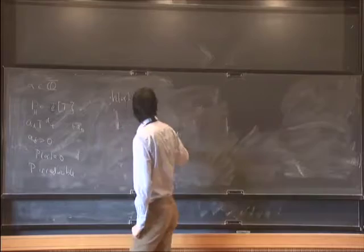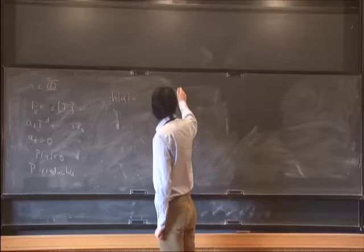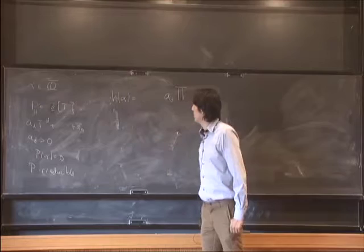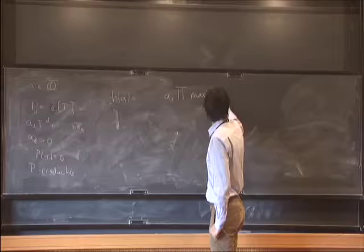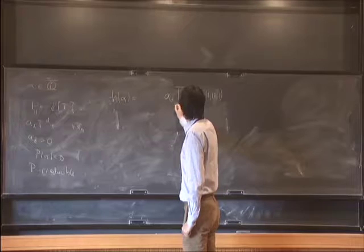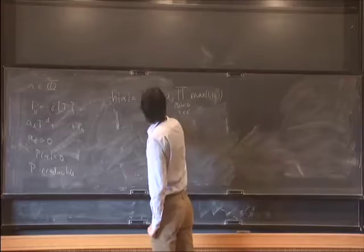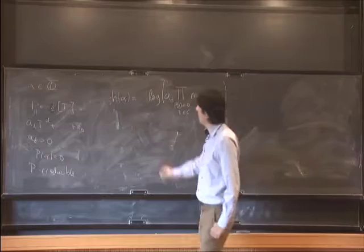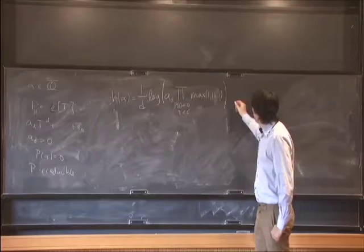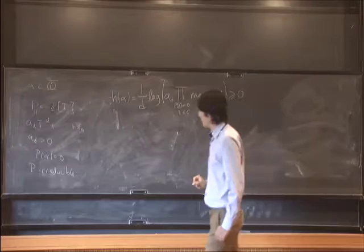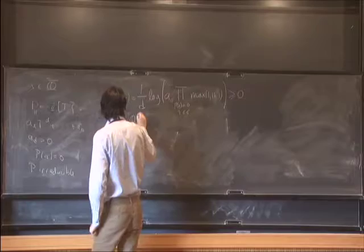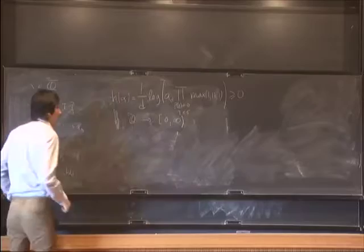Given this polynomial, I write down the height as follows. I take the leading term, which essentially saves the finite information of alpha, and then I multiply it with the product over all conjugates of alpha that lie outside the unit circle — taking the product over all zeroes of p as complex numbers. To normalize everything, I take the log of this expression and divide it by the degree of the minimal polynomial. Quite obviously, this is going to be non-negative. So this is a well-defined map taking an algebraic number to a non-negative real number.